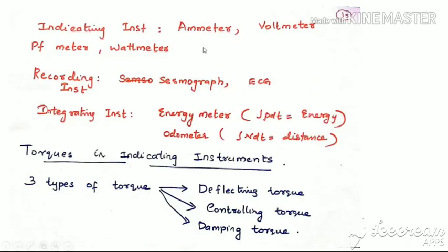Indicating instruments include ammeter, voltmeter, power factor meter, and wattmeter — they indicate the value of voltage, current, power factor, or power. Recording instruments include seismograph and ECG; ECG continuously monitors the waveform of the heart including diastole and systole. Integrating instruments include energy meter and odometer. The energy meter integrates power over time to give energy consumed; the odometer sums speed over time to give total distance covered.